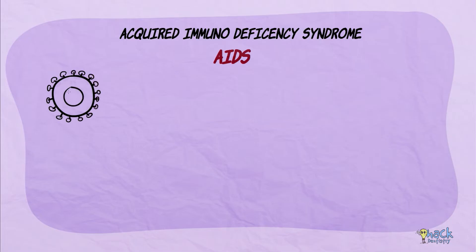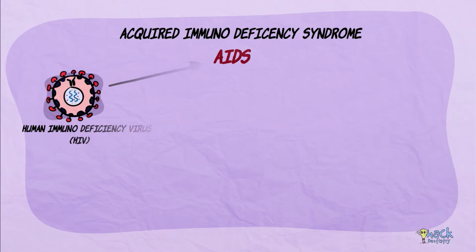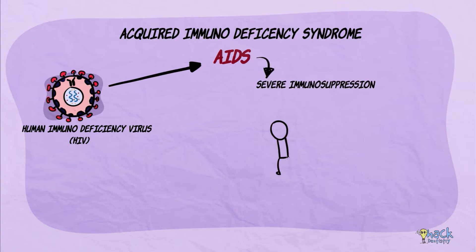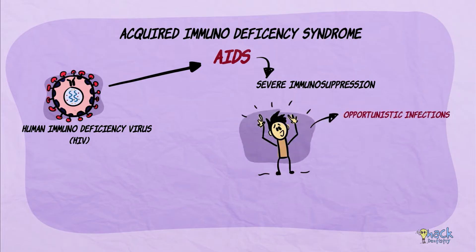Acquired immunodeficiency syndrome is an infection caused by the retrovirus human immunodeficiency virus. This disease is characterized by severe immunosuppression, making the patient susceptible to various opportunistic infections, malignancies, and neurological disorders.